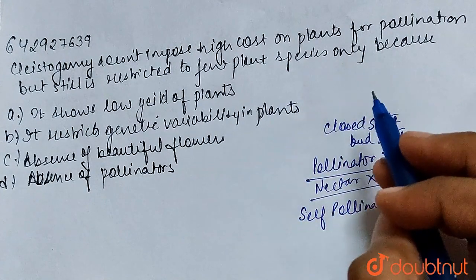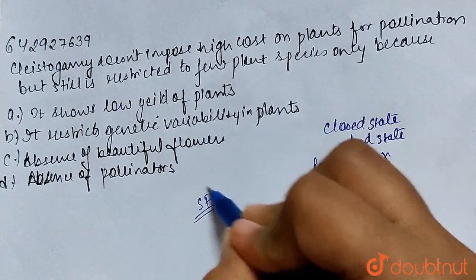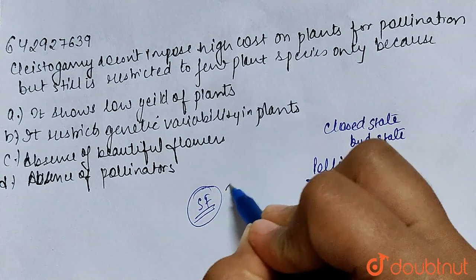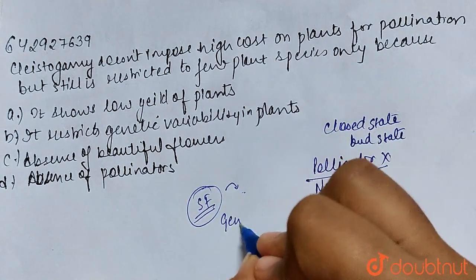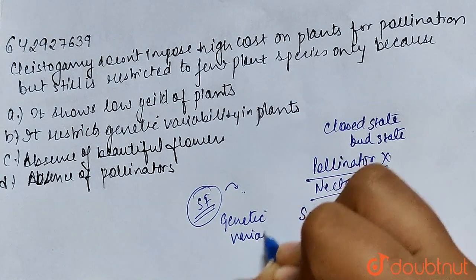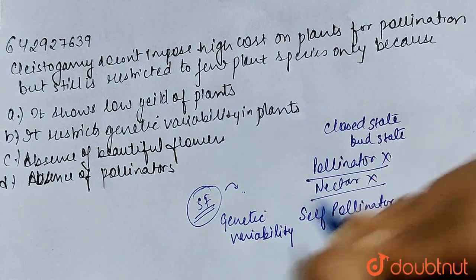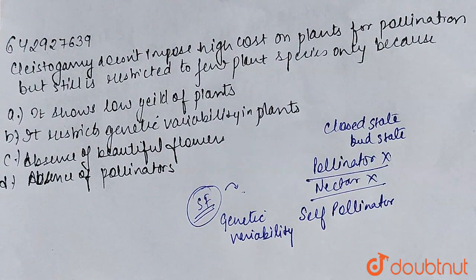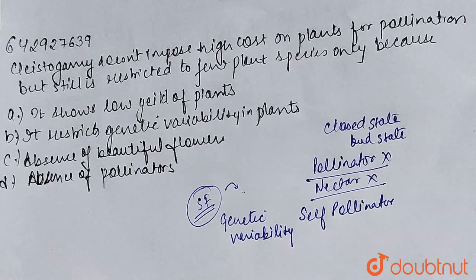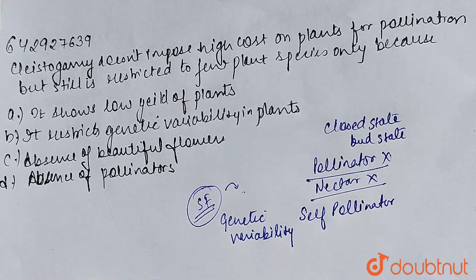But why is it restricted to some species? Because since there is self-pollination within the same flower, if there is no pollinator, the species will have low genetic variability. When cross-fertilization occurs between different flowers, we get to see the genetic characters of two flowers. But since the same flower has pollination and fertilization, there is no chance of genetic variability. This is why cleistogamy is restricted to only some plant species.